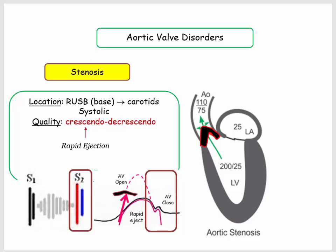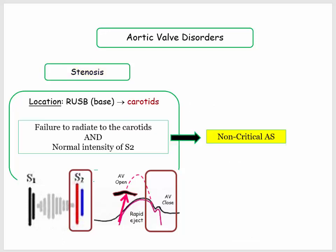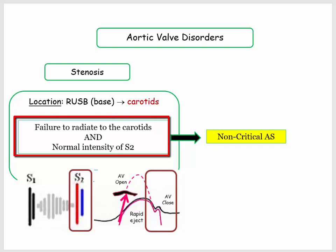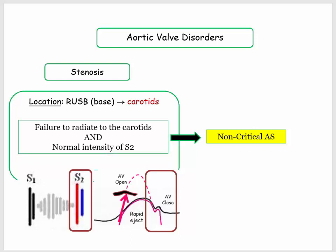The intensity of S2 does correlate with the severity of aortic stenosis. If S2 is normal in intensity, the likelihood of critical aortic stenosis is diminished. If the murmur fails to radiate to the carotids and the intensity of the aortic component of S2 is described as normal, you can effectively exclude the presence of severe or critical aortic stenosis.